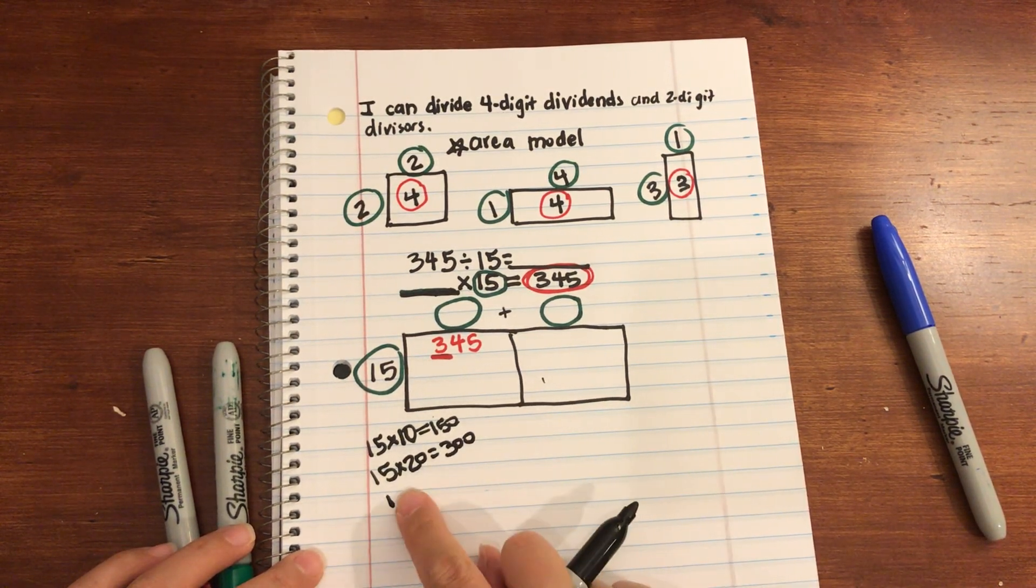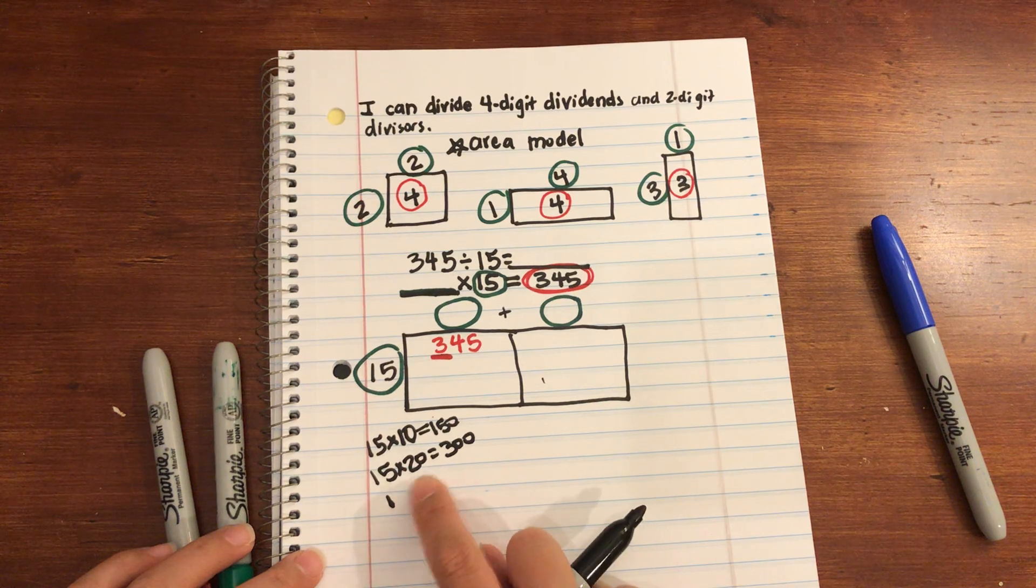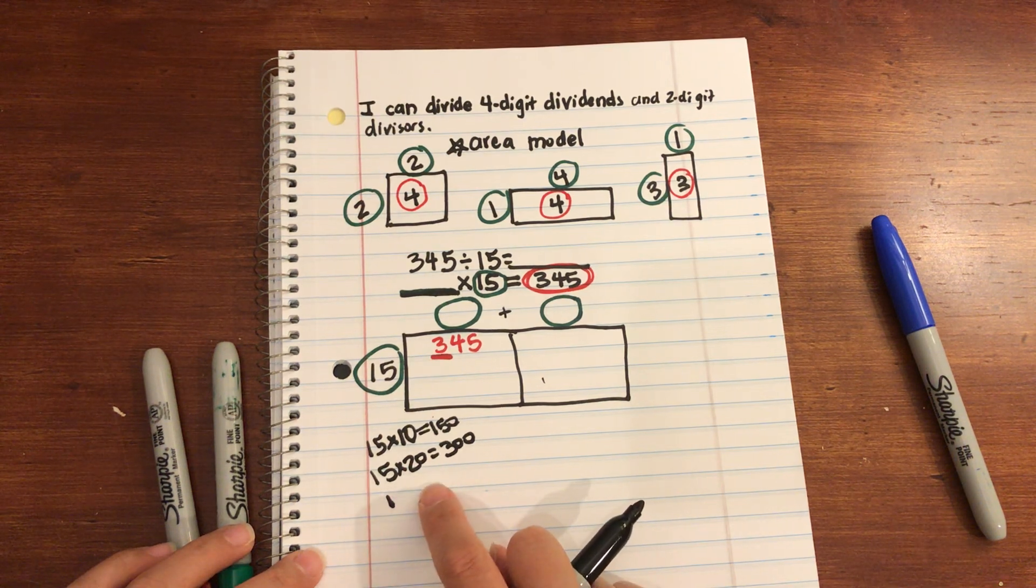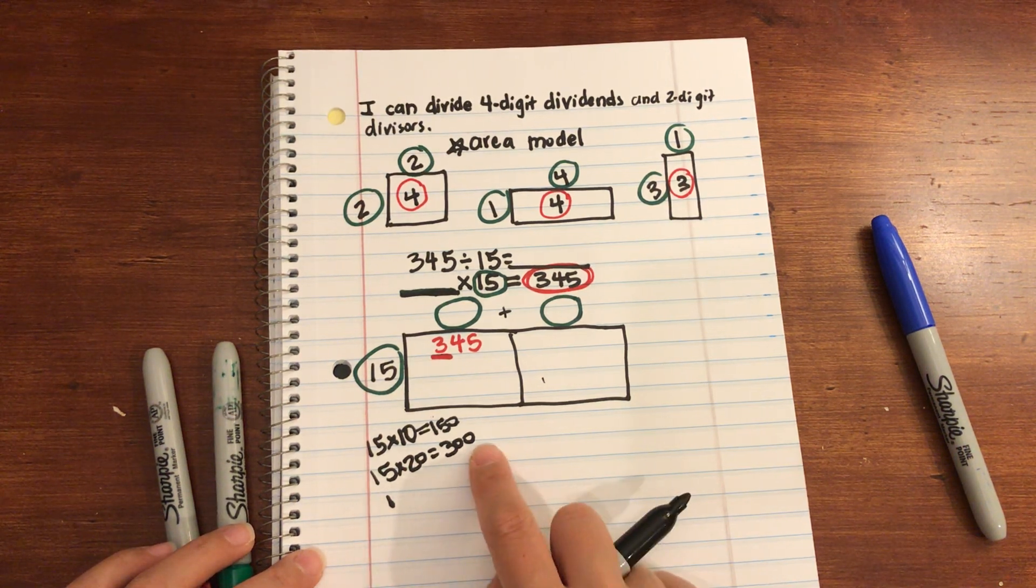And you know what? If I do another multiple of 10, which is 30, I know that's going to be over. It's going to be 450.